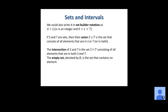Set builder notation lets us describe sets concisely. For example, A = {x | x is an integer and 0 < x < 7} is read 'x such that x is an integer and x is between 0 and 7, not including 0 or 7' — because there's no equals sign on those inequalities. Written out, this set would be {1, 2, 3, 4, 5, 6}, the same set as before but described differently using set builder notation.